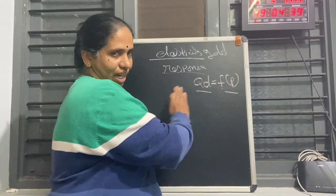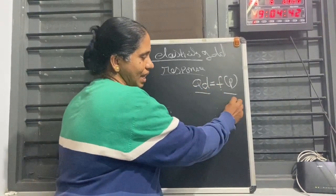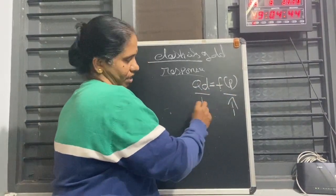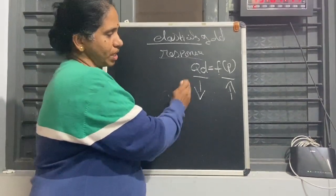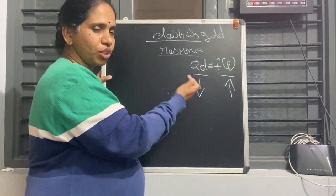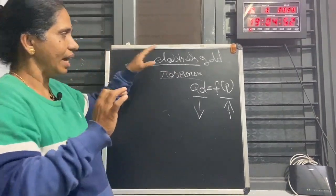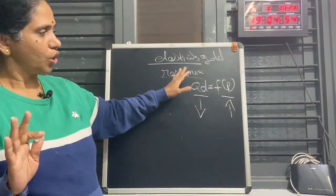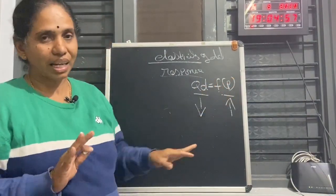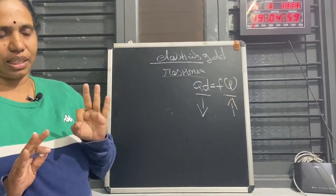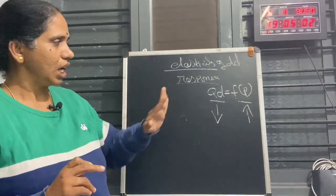You know very well that according to the law of demand, price increases and demand will decrease. But now you want to know how much it is going to increase or how much it is going to decrease — that calculation is called the elasticity of demand. If it is calculated in terms of price, we call it price elasticity. There are three concepts: price elasticity, income elasticity, and cross elasticity.